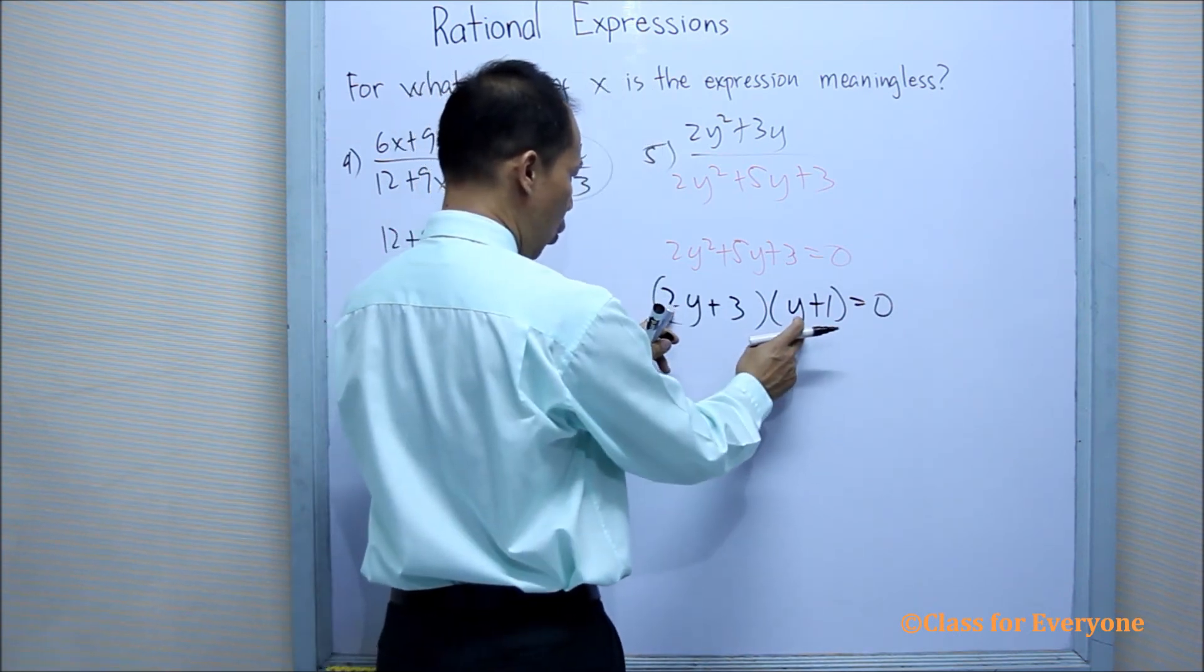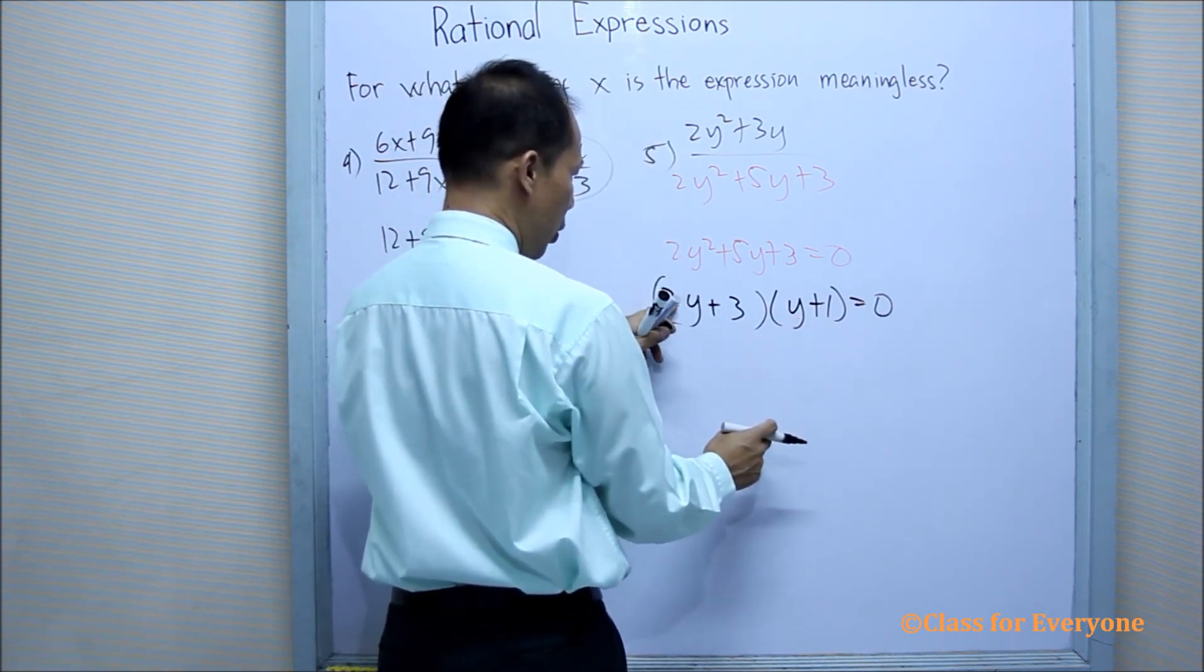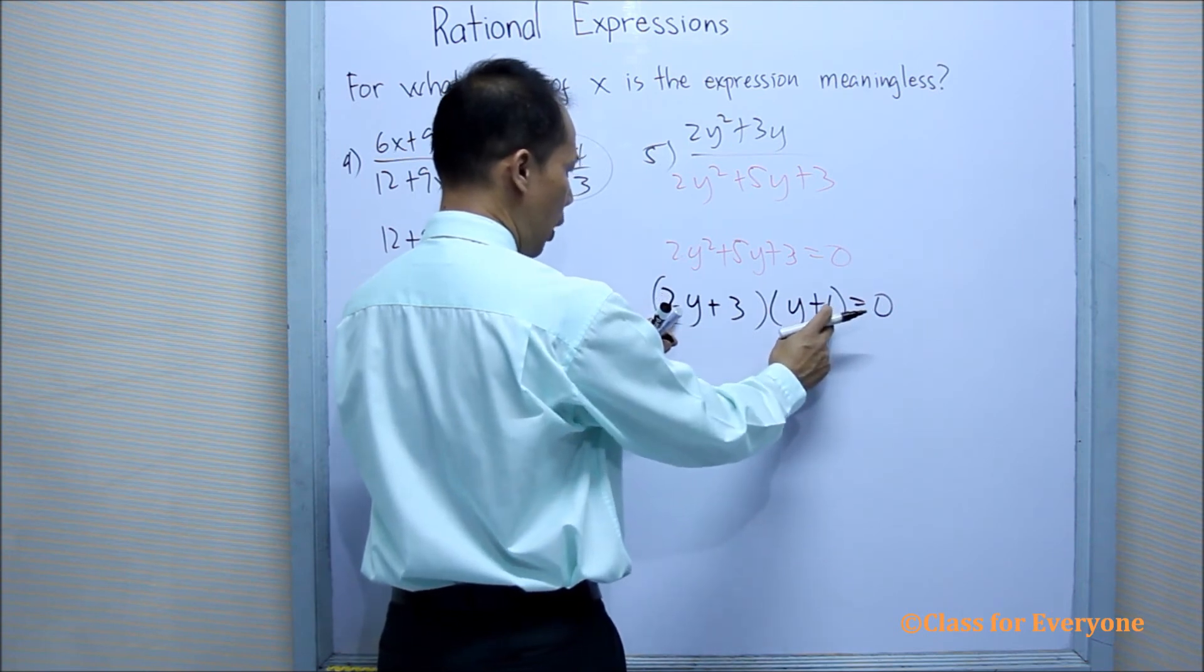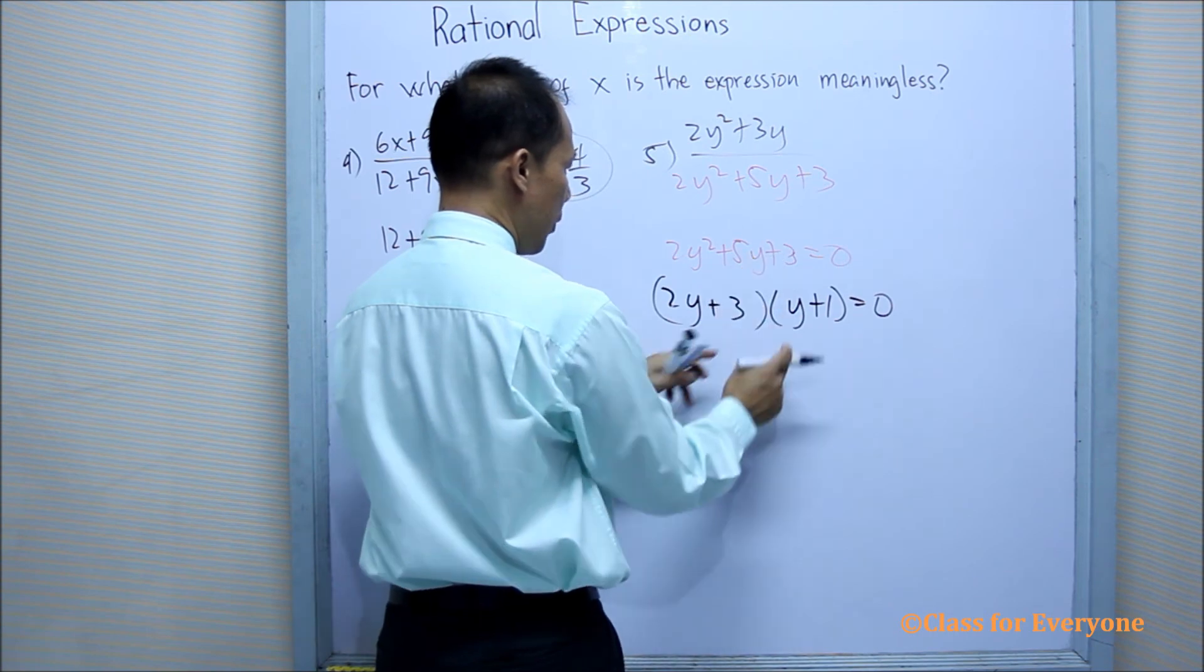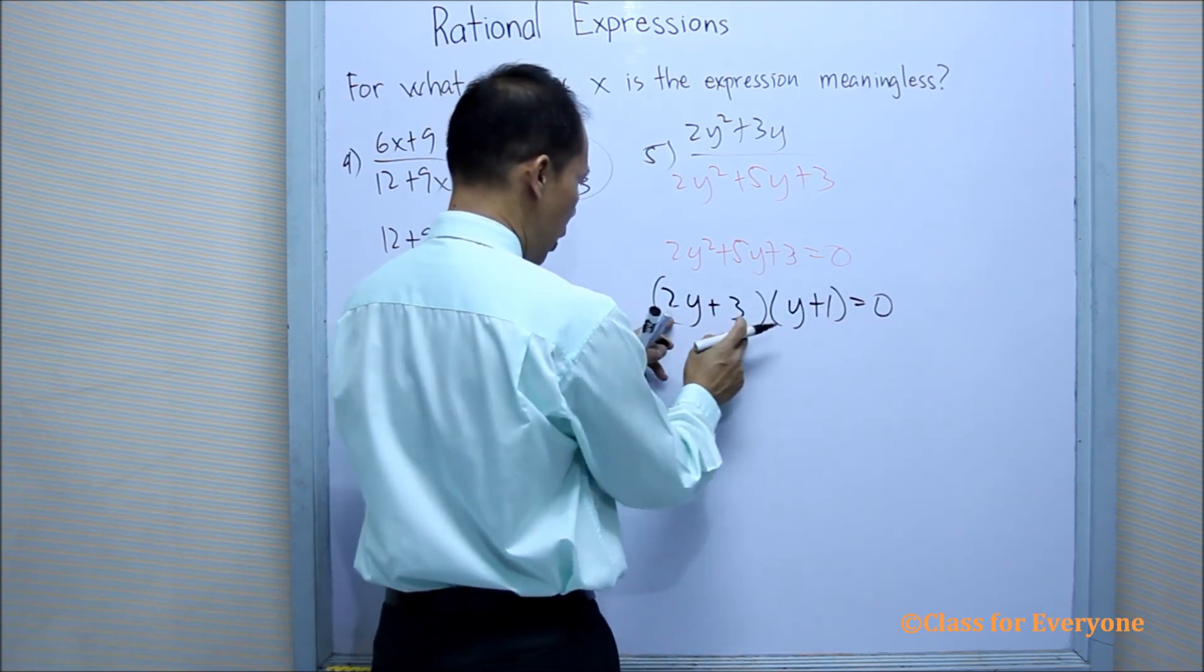If you want to check: 2y times y is 2y squared. 2y times 1 is 2y. 3 times y is 3y, plus 2y is 5y. 3 times 1 is 3.